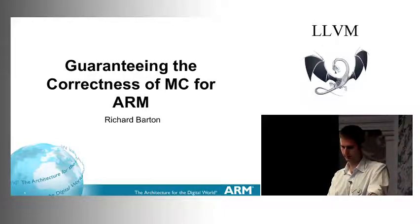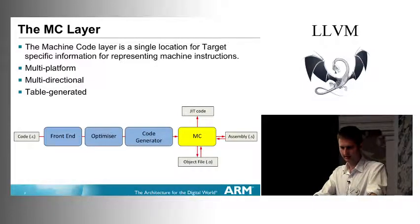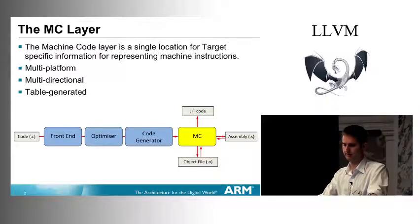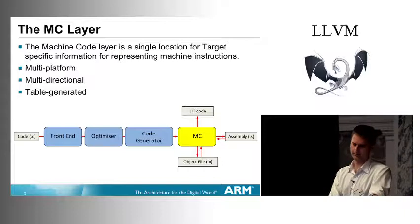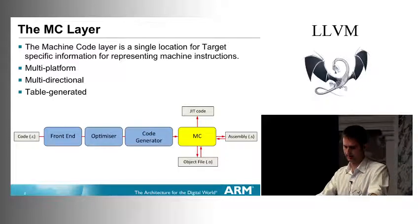Just a quick overview of what MC is, to start from a common base. MC stands for machine code. It's a single location for target-specific information for representing your machine instructions. The diagram shows a typical compiler flow: start with your source code, put it through all the normal compiler phases — front-end, mid-end — and then at the very end you get the MC layer, which converts it into assembly code or object code if you have an integrated assembler, or code to be JIT-compiled.